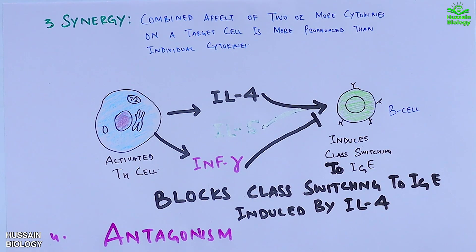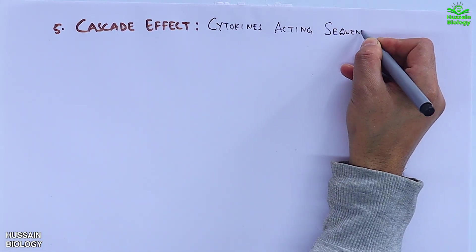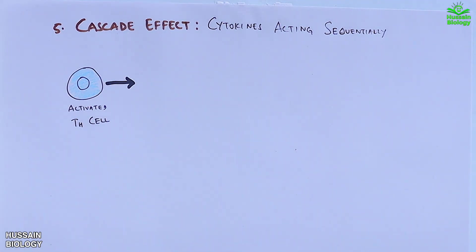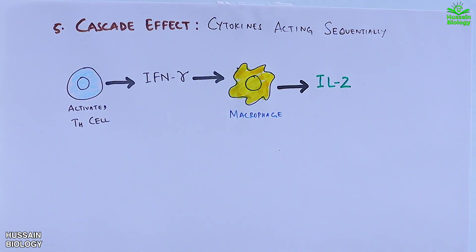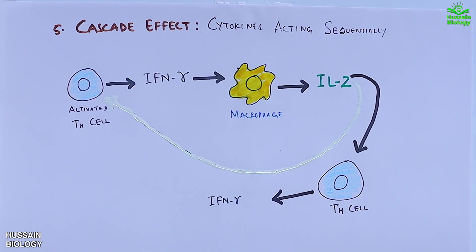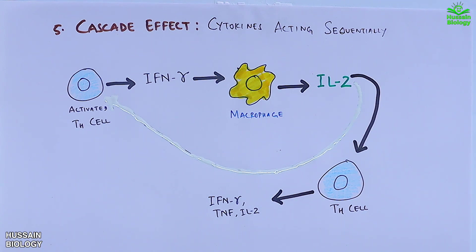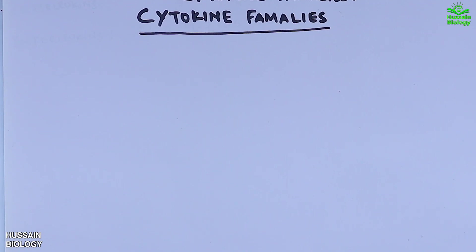Then we have the last effect, the cascade effect, where cytokines act sequentially. Here in the diagram, the T helper cell secretes interferon-gamma, which then stimulates macrophages to secrete interleukin-2, and then this interleukin-2 stimulates the T helper cells to secrete interferon-gamma, TNF, and interleukin-2 for mediating various functions. This explains the cascade effect of cytokines.